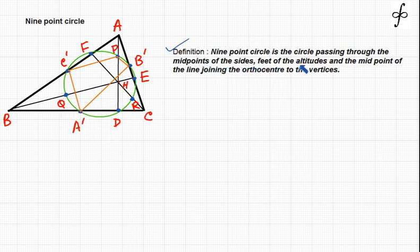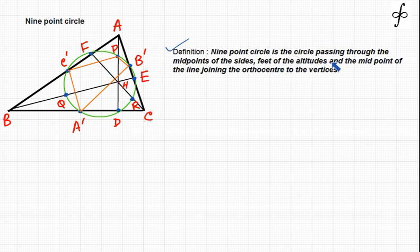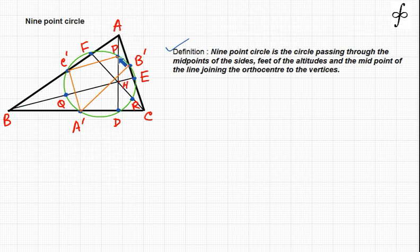The nine-point circle also passes through the feet of the altitudes: AD is the altitude and D is the foot, BE is the altitude and E is the foot, CF is the altitude and F is the foot. It also passes through the midpoints of the lines joining the ortho center H to the vertices: for HA the midpoint is P, for HB the midpoint is Q, and for HC the midpoint is R.